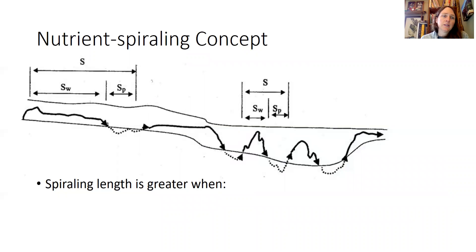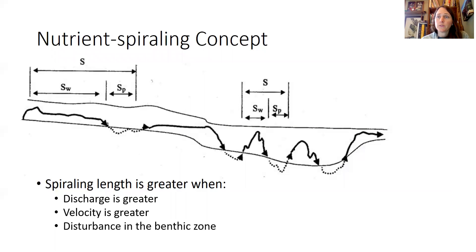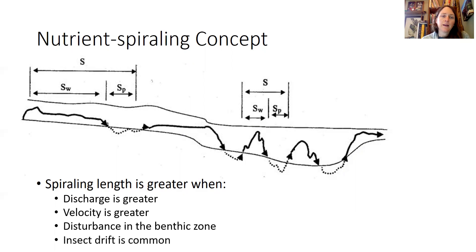The nutrient spiraling concept tells us that spiraling length will be greater when discharge is greater, when velocity is greater, and when there's more disturbance in the benthic zone — basically these distances can all be affected by the environment. Spiraling length will also be greater when insect drift is more common, since more disturbance in the benthic zone causes insects to drift more, resulting in a longer spiraling length.